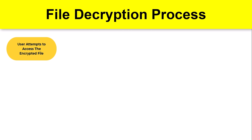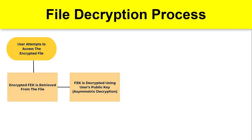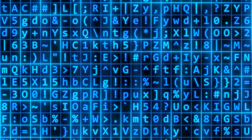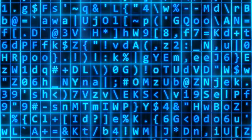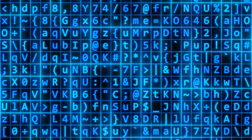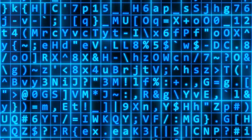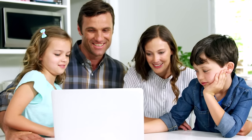When the user or an authorized account tries to access the encrypted file, Windows automatically decrypts the FEK using the user's public key, which is securely stored in the user's profile. The FEK is then used to decrypt the file's contents on the fly, allowing the user to access the file as if it were not encrypted. This process is transparent to the user, meaning they do not need to manually decrypt or re-encrypt files. Encrypting File System also allows multiple users to access the same encrypted file by encrypting the FEK with each user's public key, ensuring that only authorized users can decrypt and access the data.